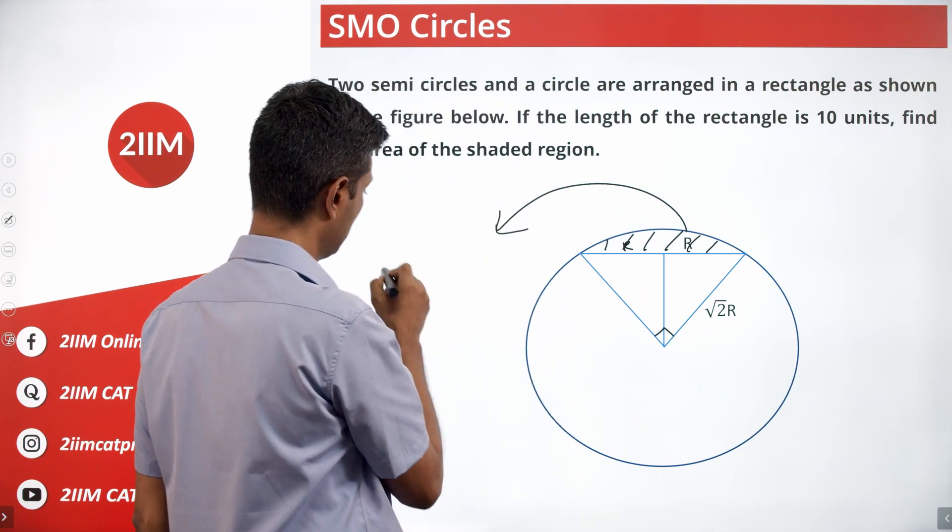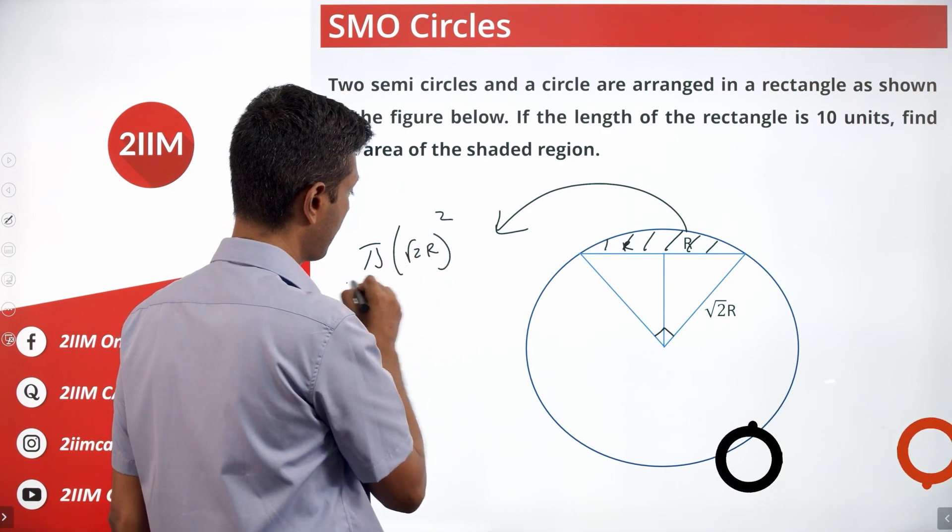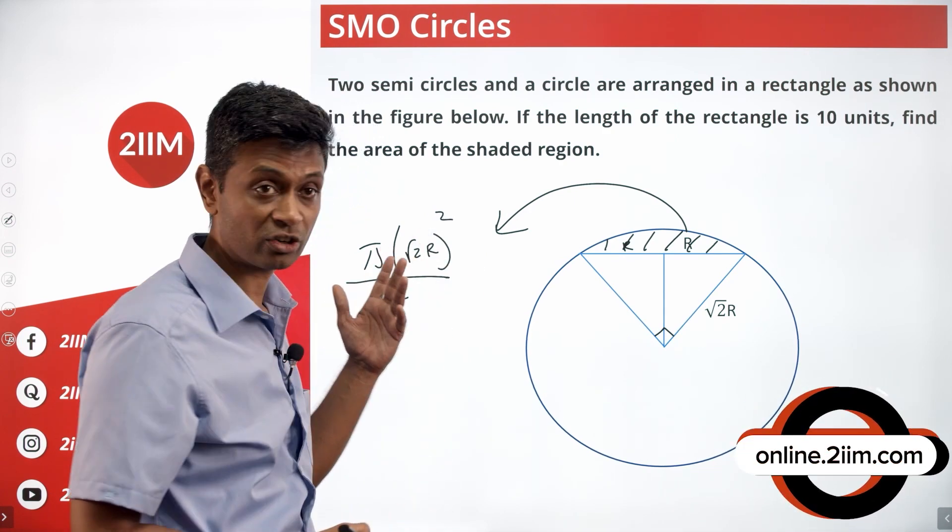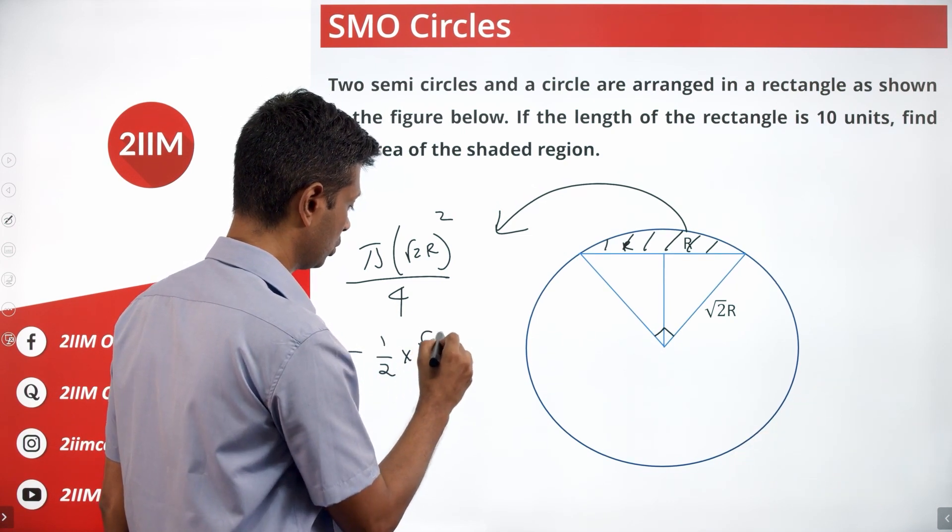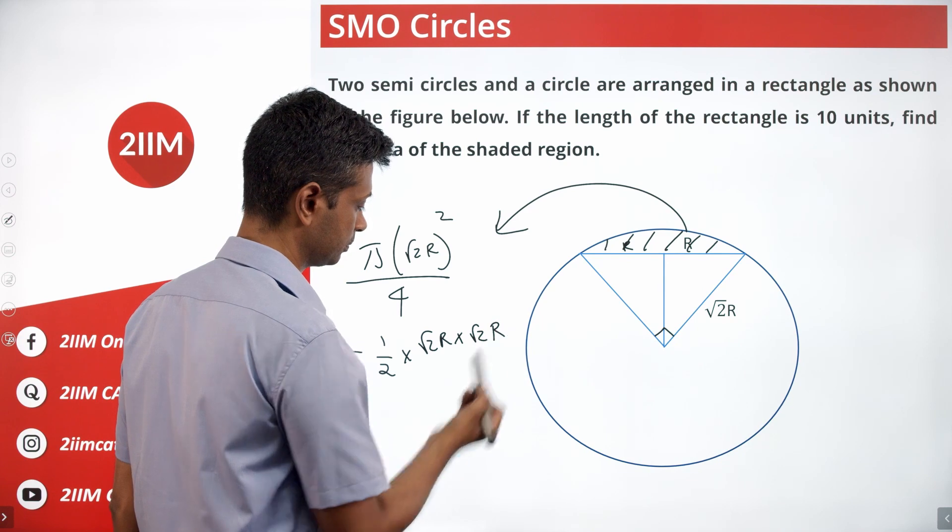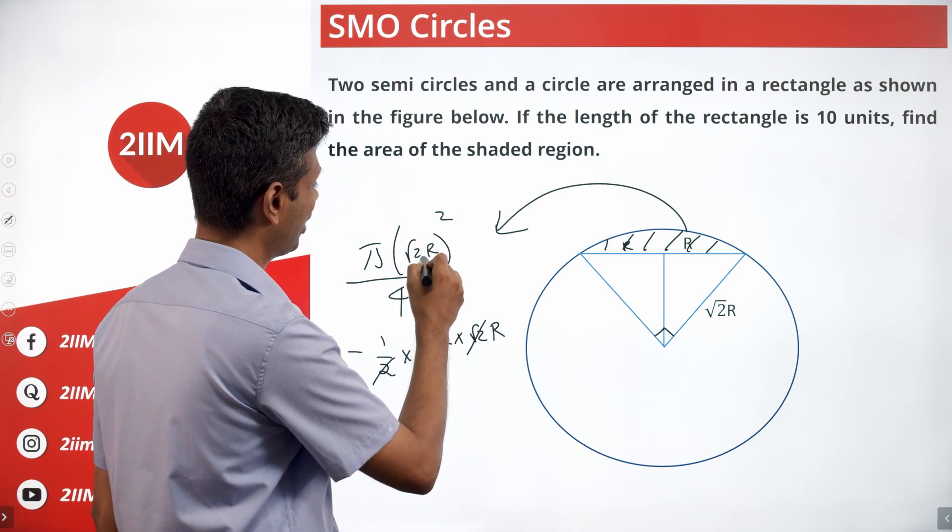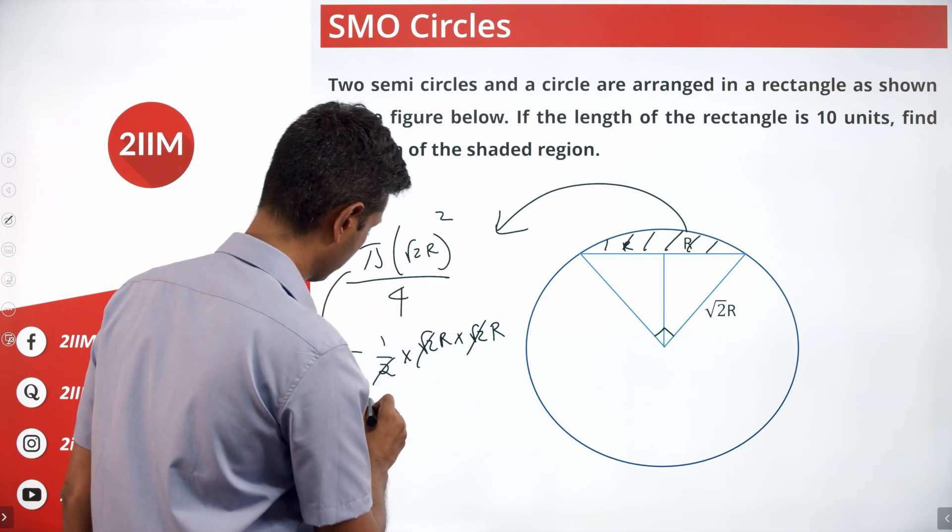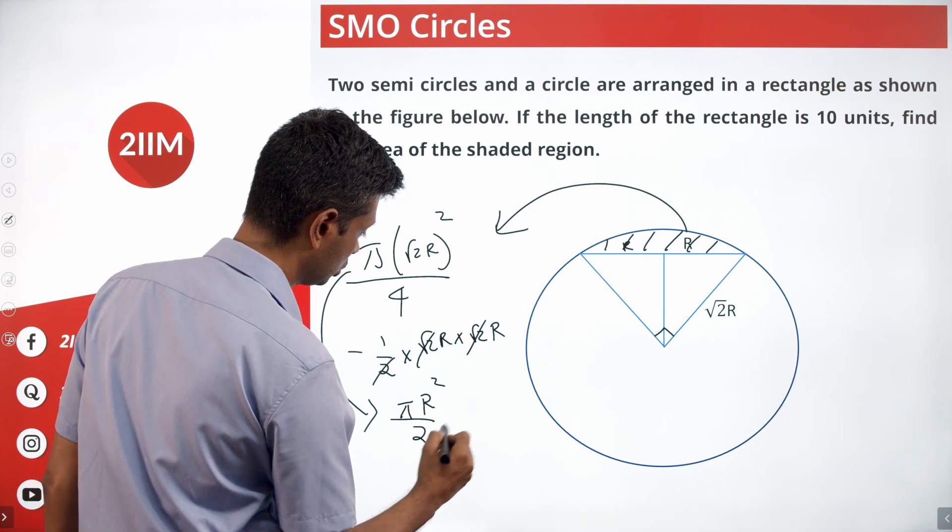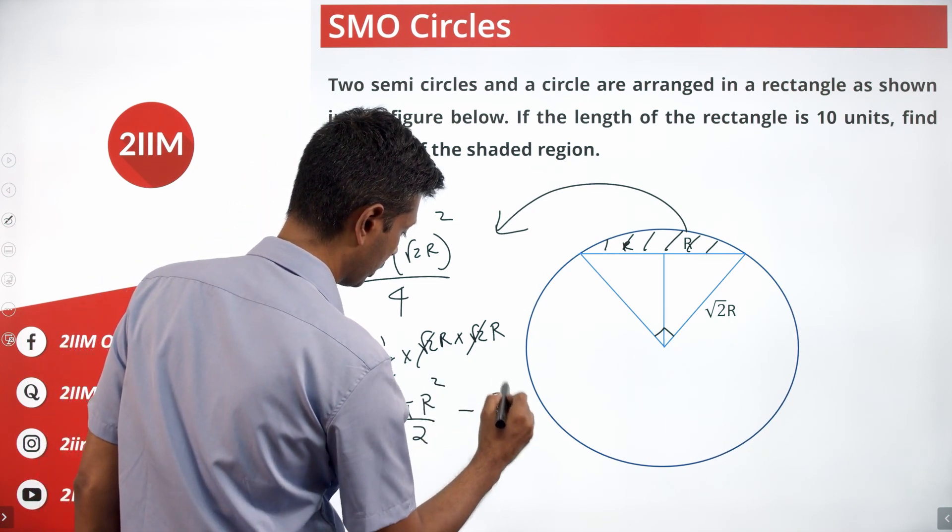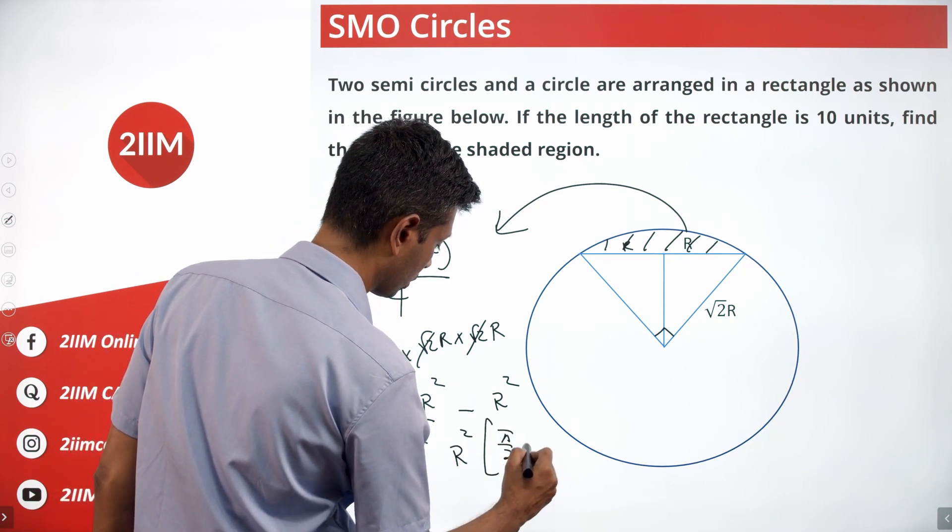This area that we want to calculate is pi into root 2R whole square by 4, one fourth of pi R square, minus half into root 2R. This goes away completely. Root 2R square is 2R square. So this will become pi R square by 2 minus R square, or R square into pi by 2 minus 1.